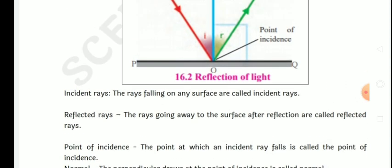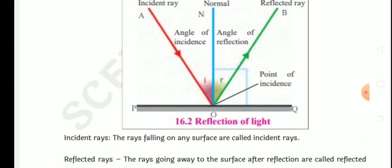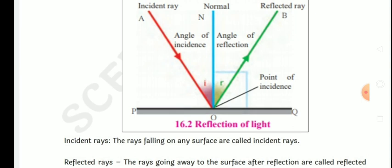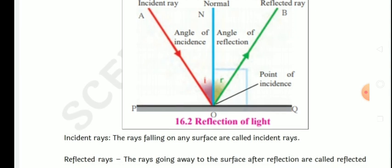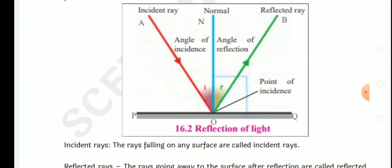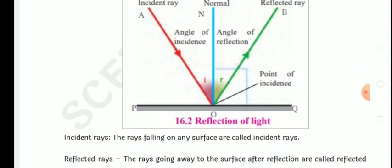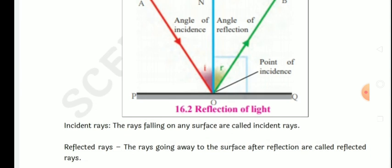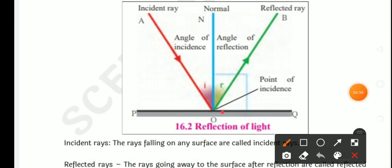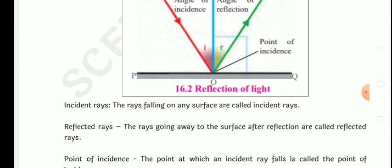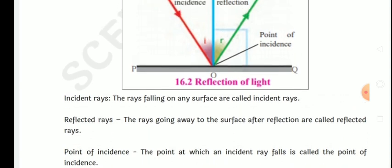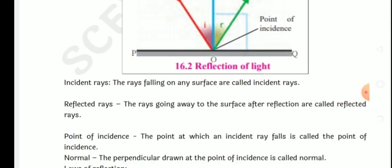Incident ray means: the rays falling on the surface are called incident rays — AO is the incident ray. Reflected ray means: the rays going away from the surface after reflection are called reflected rays — OB is the reflected ray. Point of incidence: O is the point of incidence — the point at which the incident ray falls is called the point of incidence.